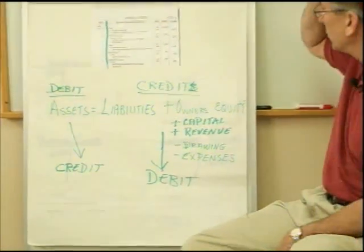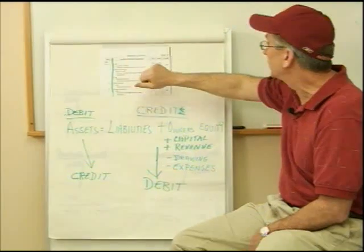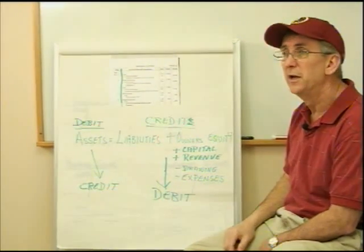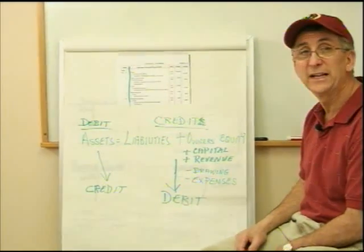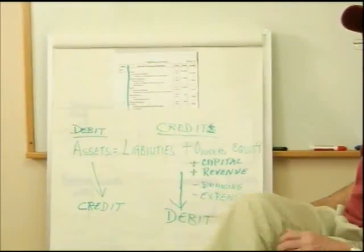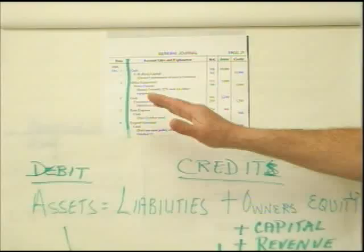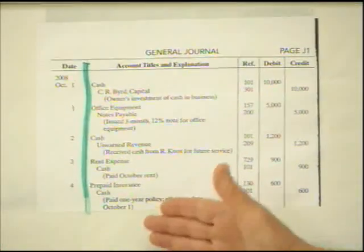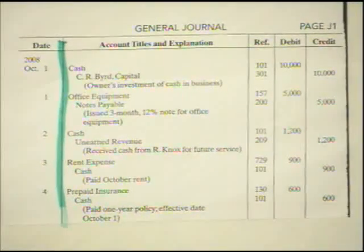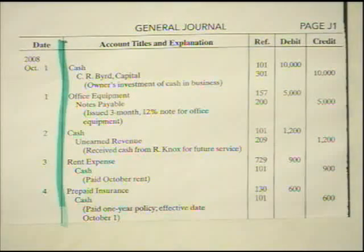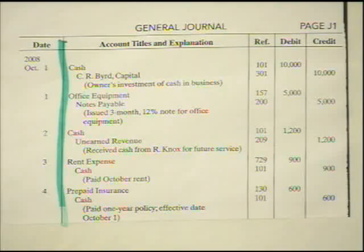Let's take a look at the general journal. The general journal is called the book of original entry because it is the first place any of our transactions are entered — that would be a good test question. When we do a general journal there's a specific format you should use, and it's what you'll need for exams and entries for the rest of the semester.